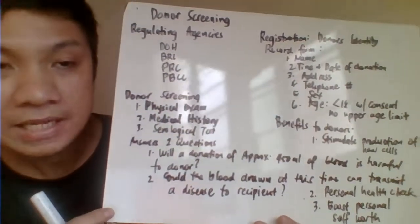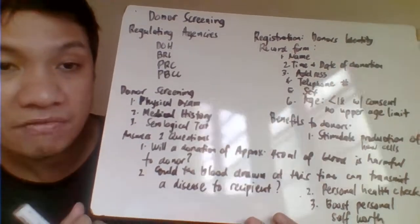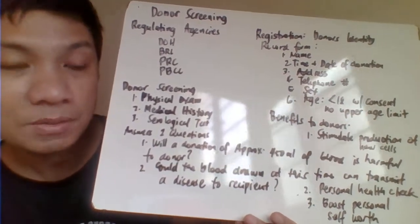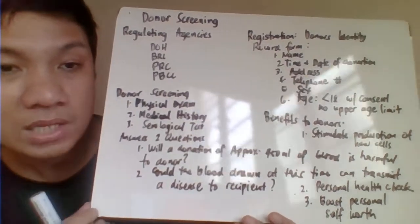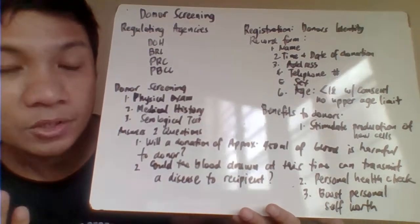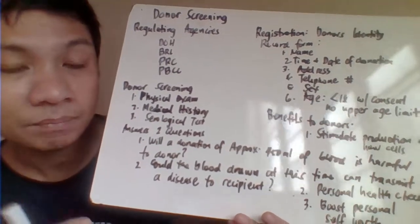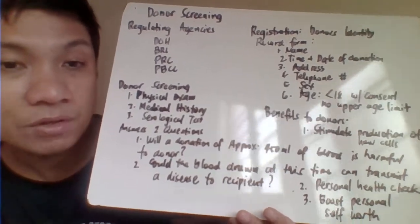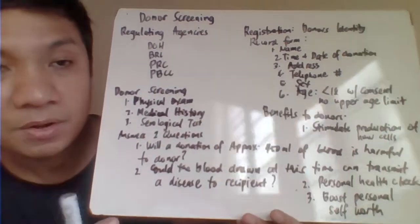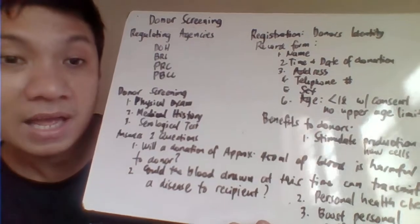We need to screen our potential donor effectively to make sure the donor is really fit for donation. Screening the donor before blood collection will protect both the donor and the recipient. For example, if the donor is an anemic patient, blood donation will cause an ill effect on the patient's health.